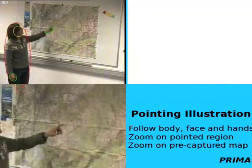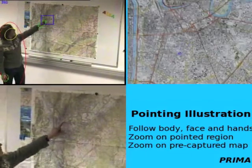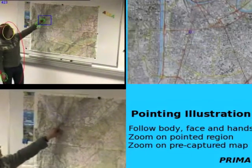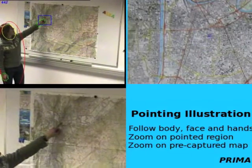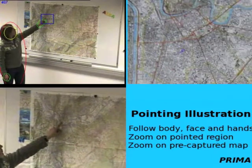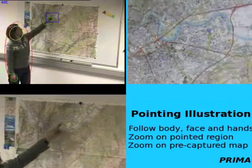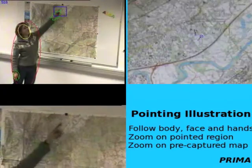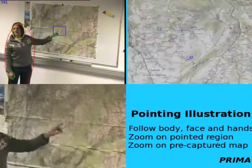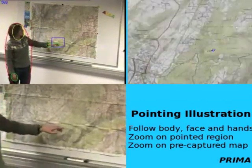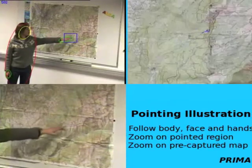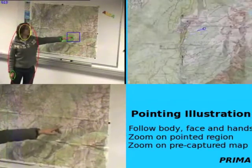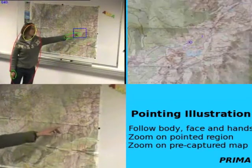Trackers for face and hands are then used to estimate where in the scene the person is looking. In this example, they're looking at a map. We can use the attended position on the map to zoom in and provide a higher resolution version of where they're looking.